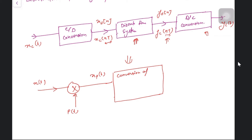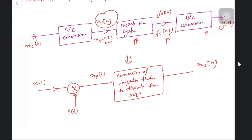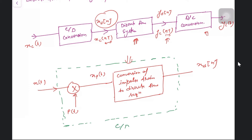The conversion involves converting the impulse train to a discrete time sequence, and after that you get x_d[n]. This is where the C-to-D conversion takes place. You have to use the impulse function as part of this process — this is essentially the C-to-D conversion step.